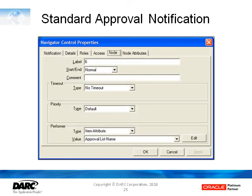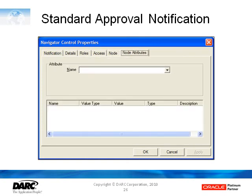If we then focus on the performer region, you can see that the item attribute type is selected along with the value of Approval List Name. This is the Approval List Name field we saw on the ECO header. This is not set up out of the box this way, so this is usually one of the things you have to do to get the Standard Approval notification to work at all. And again, because there's no voting method, we can see in the node attributes section that there are no attributes selected.